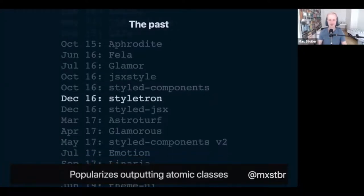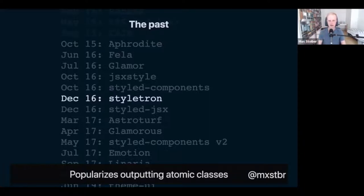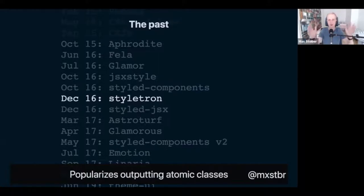A couple of months later, Ryan Tsao — who made CSJS and works at Uber — released Styletron, a CSS-in-JS library that for the first time ever output atomic class names. Atomic CSS is the concept where you have a class name per CSS rule: one for margin 5px, one for color red, etc. What ends up happening is you get very tiny CSS because you don't have that many unique CSS rules throughout your application — they repeat. By outputting atomic classes, the total CSS size can stay smaller than injecting a class name per component. Uber uses Styletron for practically all their websites.